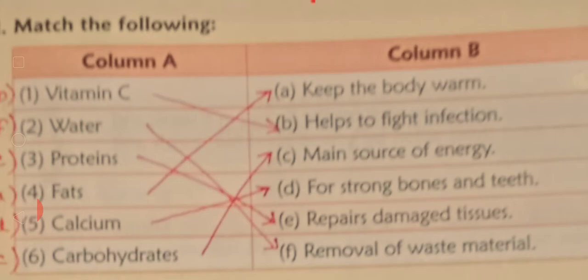Fifth number: Calcium — C-A-L-C-I-U-M. And the last, sixth number: Carbohydrates — C-A-R-B-O-H-Y-D-R-A-T-E-S. Okay, now we will write in the other Column B.